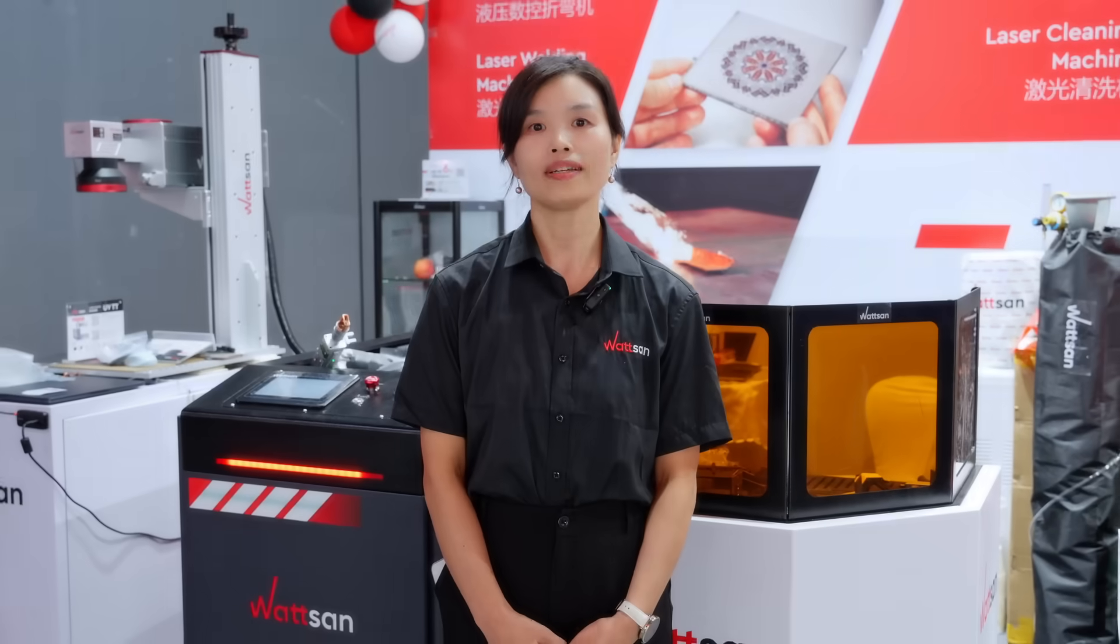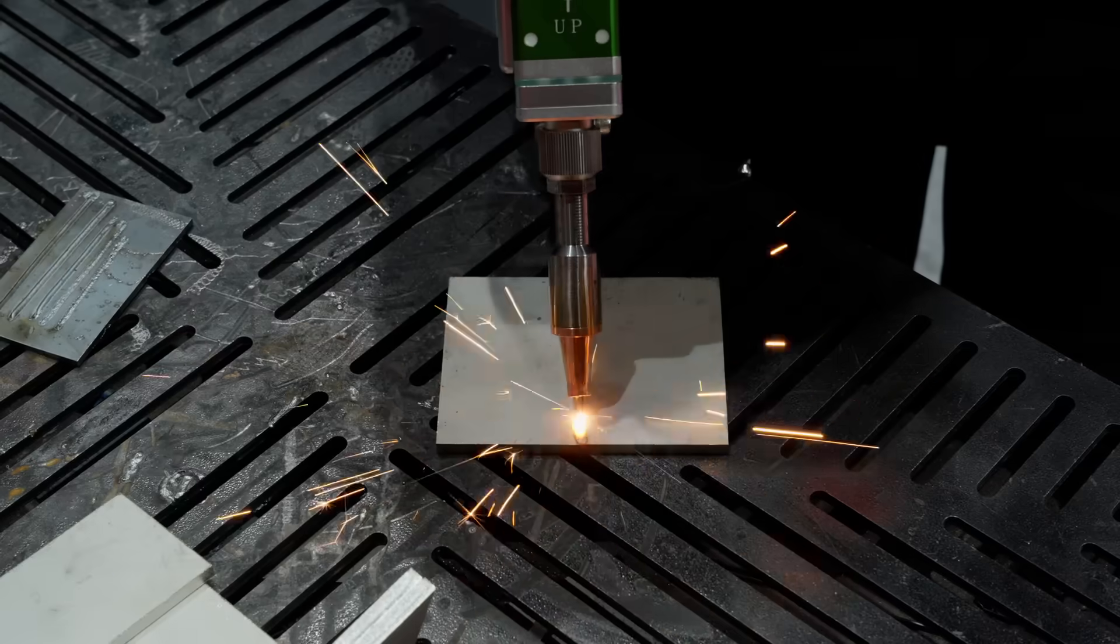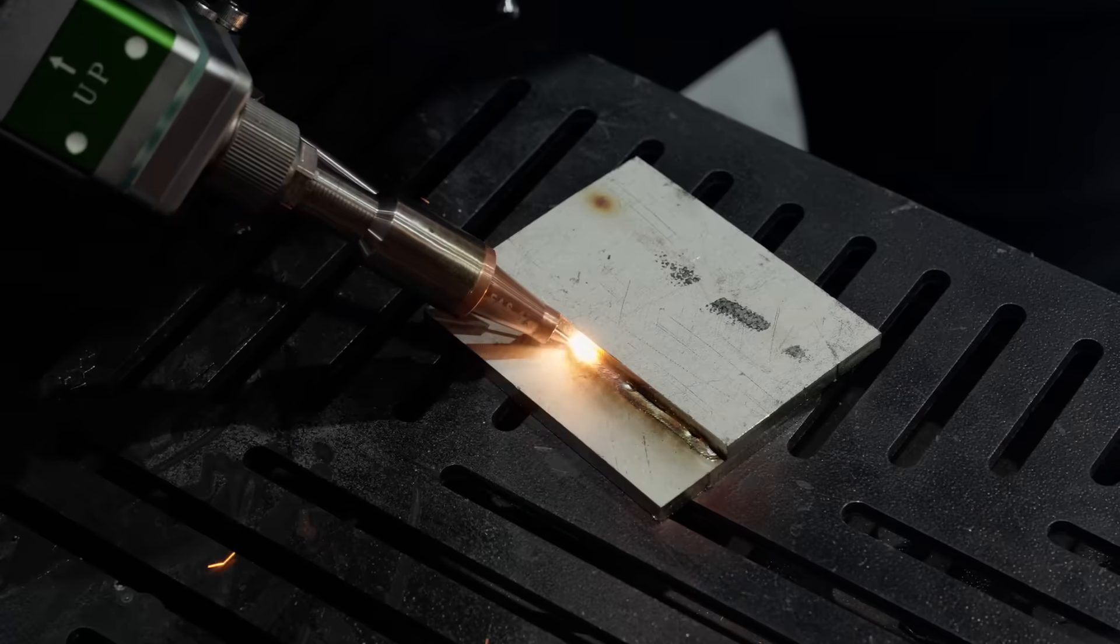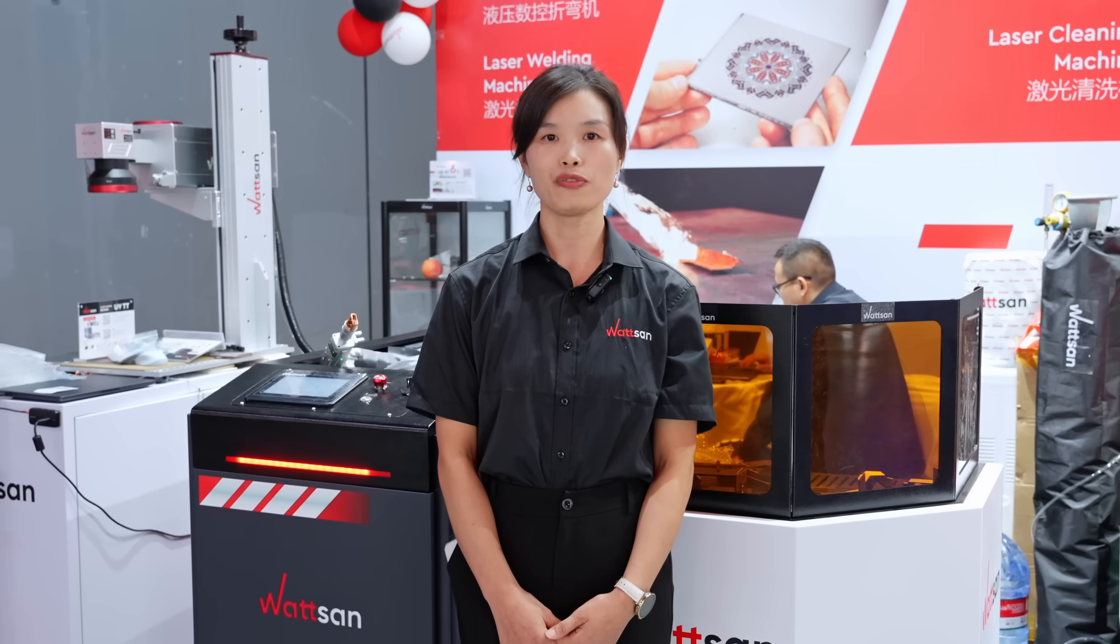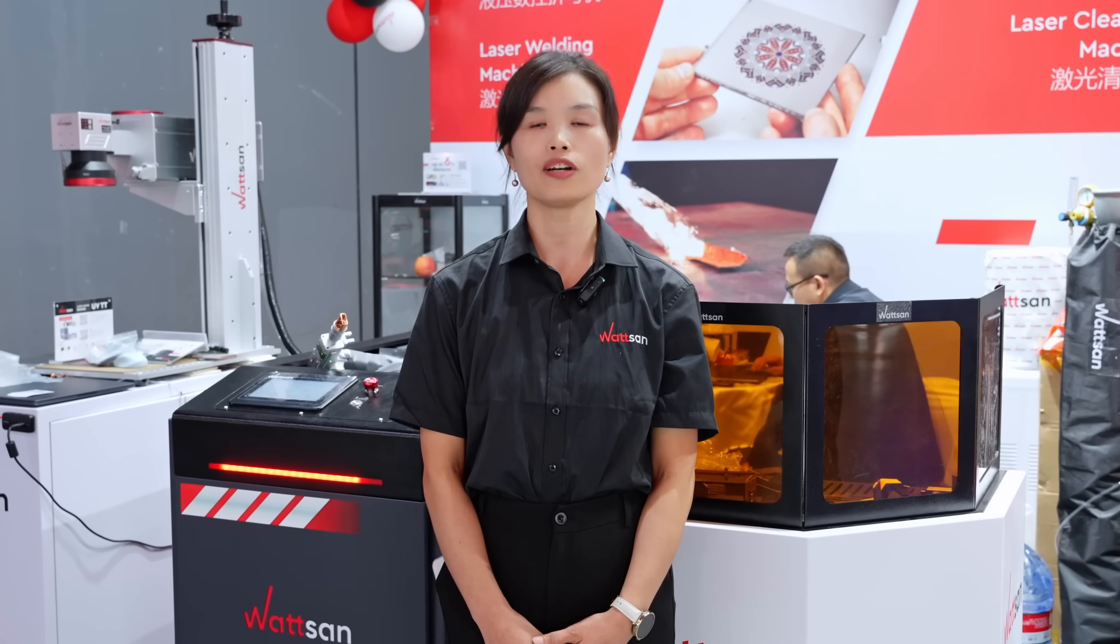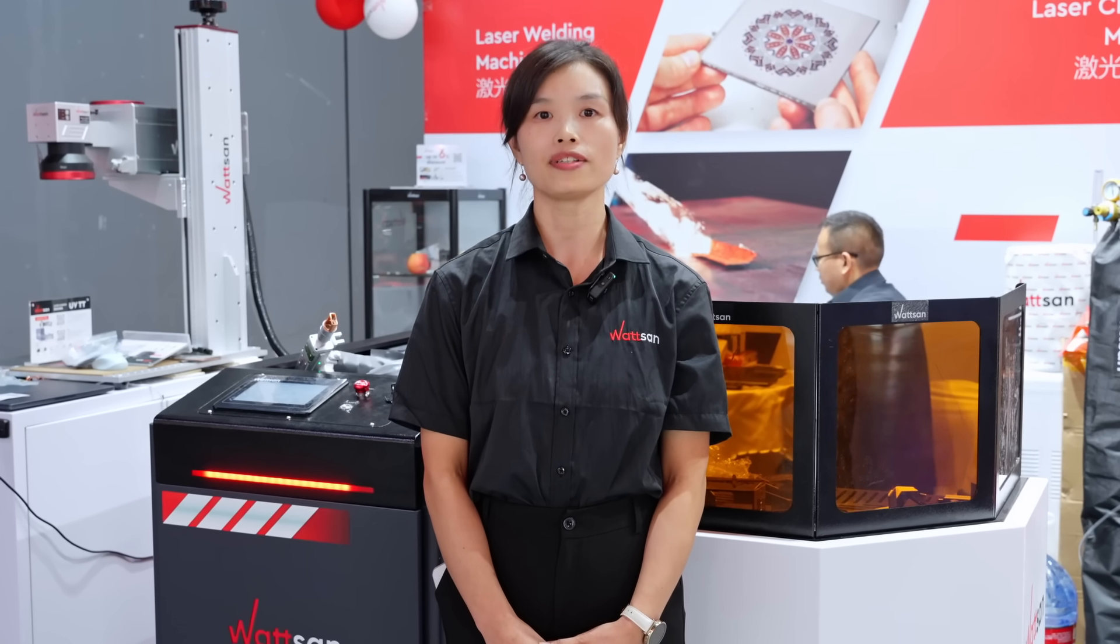With laser welding, we can achieve butt, corner, T-joint, circular, lap, and edge welds. This can be performed on horizontal, vertical, or any other angled surfaces.